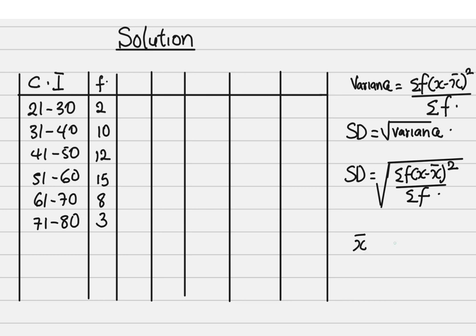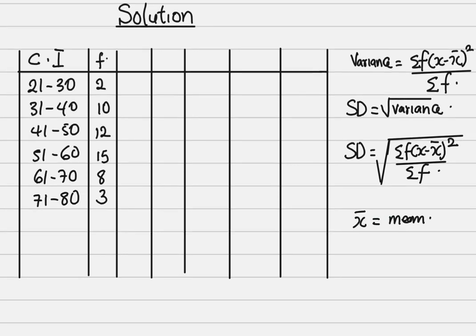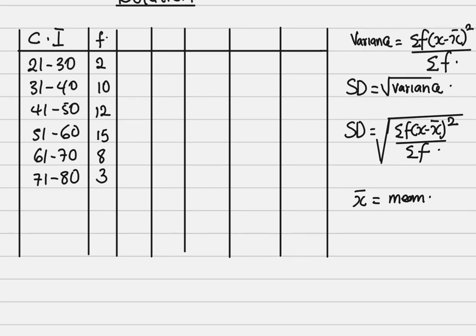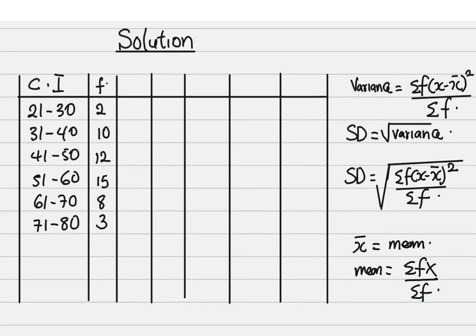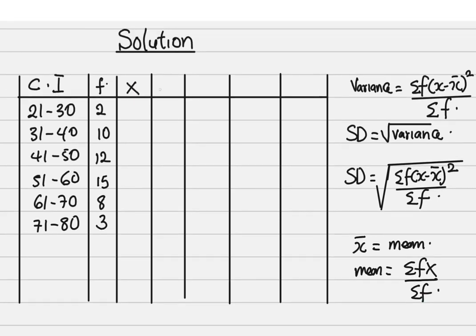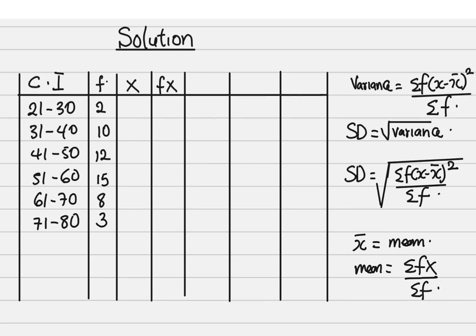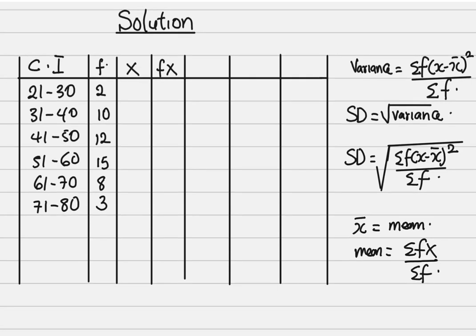From the formula we have x̄, and x̄ is the mean. So it means we have to find our mean, and mean is summation fx all over summation f. This means we need our x values, then we need our fx values. As shown in a previous video, x is the average of the upper and lower class boundary.